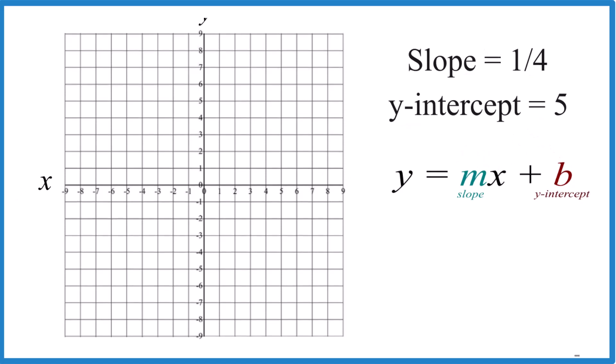First off, we have that y-intercept of 5. We just go to the y-axis. We find 5 right there. That's where we're going to cross the y-axis.